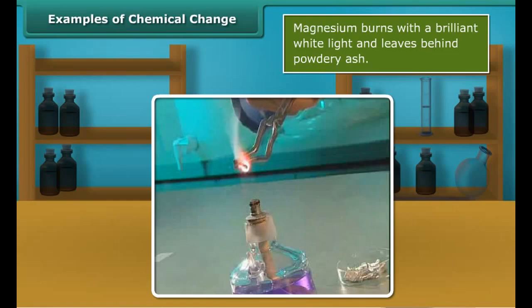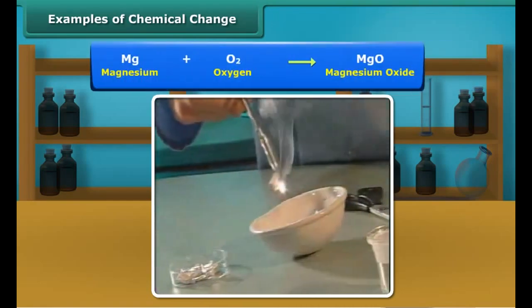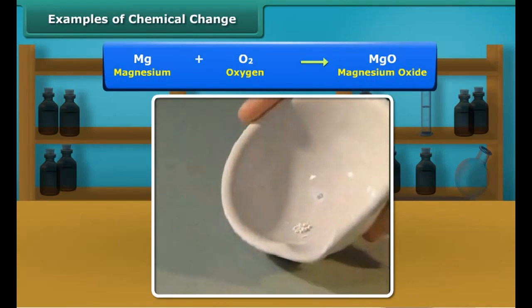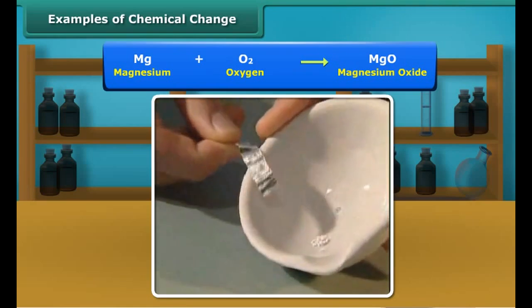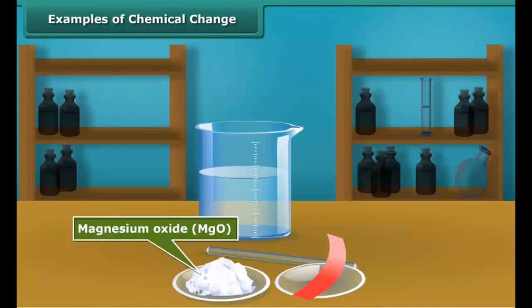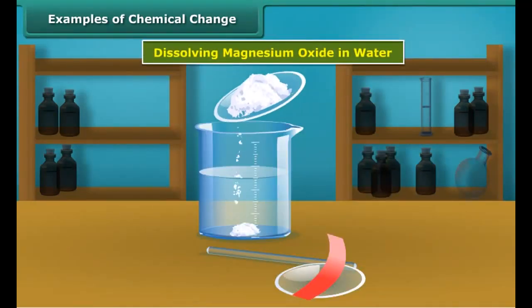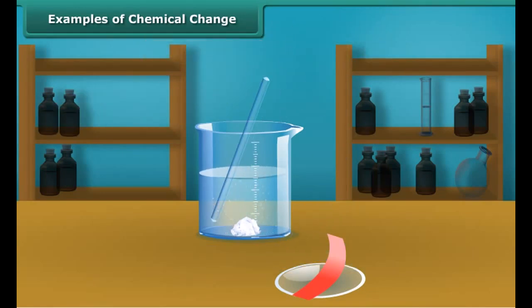Take a small ribbon of magnesium and bring its tip near a flame. It burns with a brilliant white light and leaves a powdery ash called magnesium oxide. This ash has different properties than magnesium. Therefore, burning of magnesium is a chemical change.